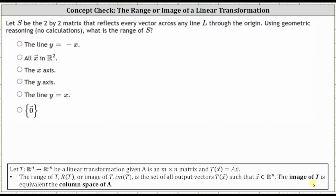Let S be the two-by-two matrix that reflects every vector across any line L through the origin. What is the range of S? The range of S is the same as the range of the transformation, or image of the transformation, which is the set of all possible output vectors.